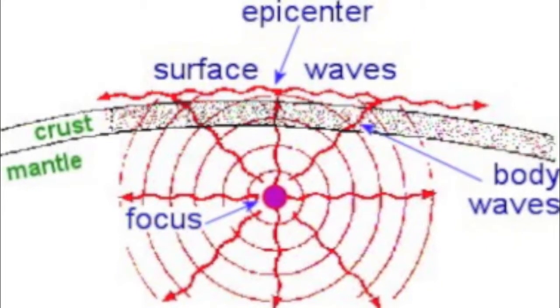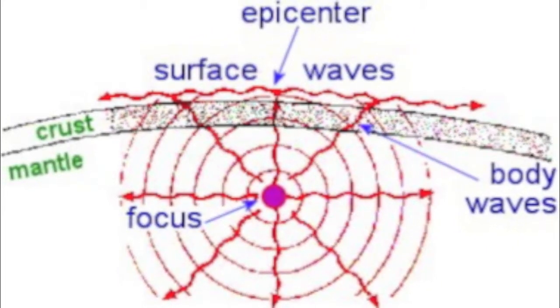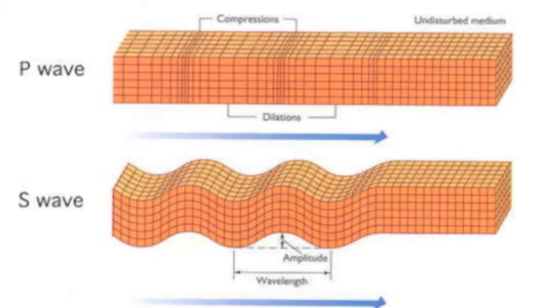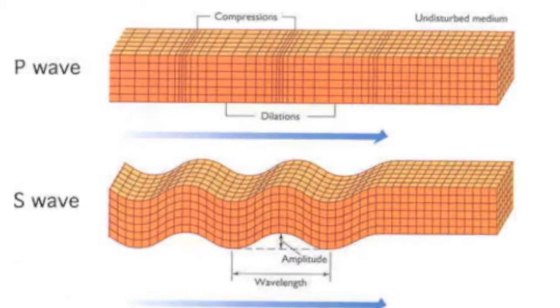S waves are seismic waves that travel at about 60% the speed of P waves. S waves move in a snake-like pattern through the earth. Secondary waves can't travel through liquid substances.